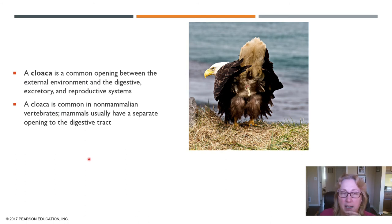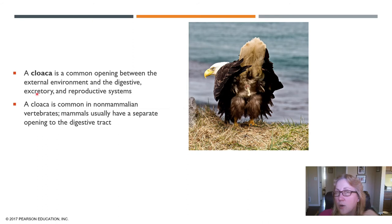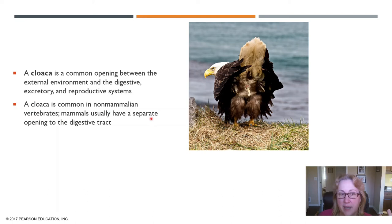Most vertebrates have a single opening called a cloaca — one opening for the digestive system, the excretory system, and the reproductive system. Reptiles, birds, amphibians, and fish have a cloaca. Mammals, however, usually have separate openings for the digestive tract and reproductive tract, except for the egg-laying mammals — the monotremes — which also have a single cloaca.